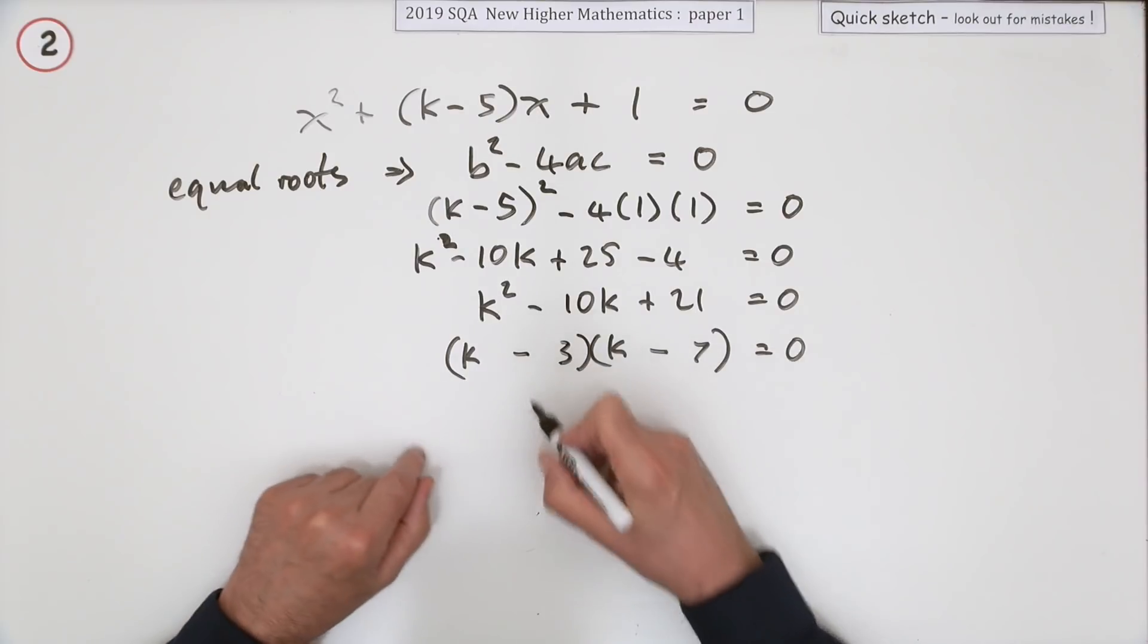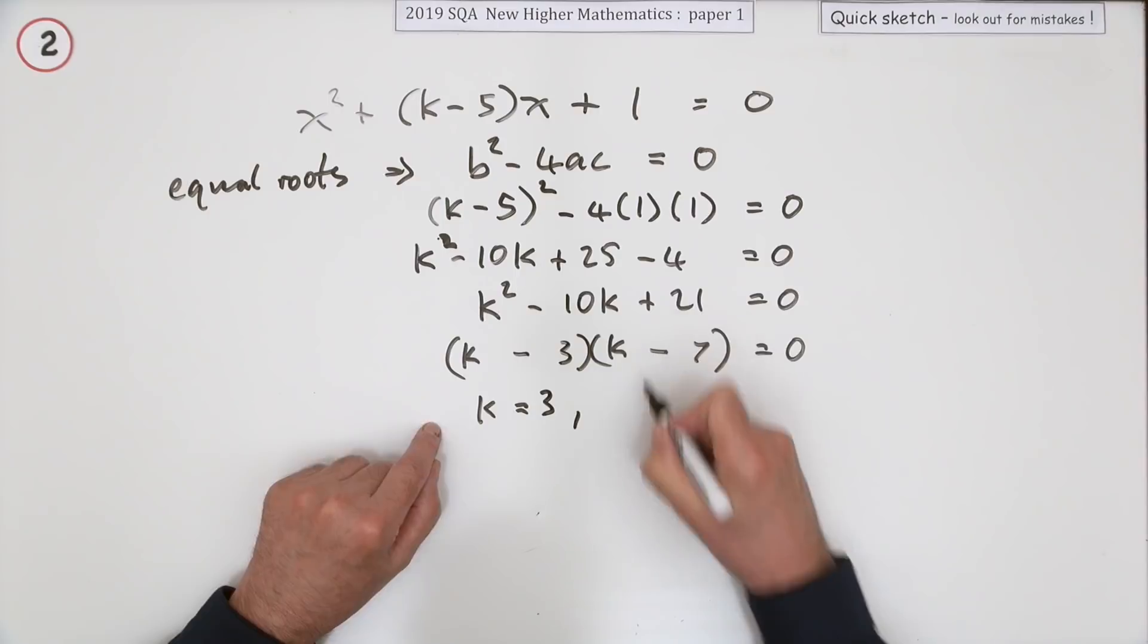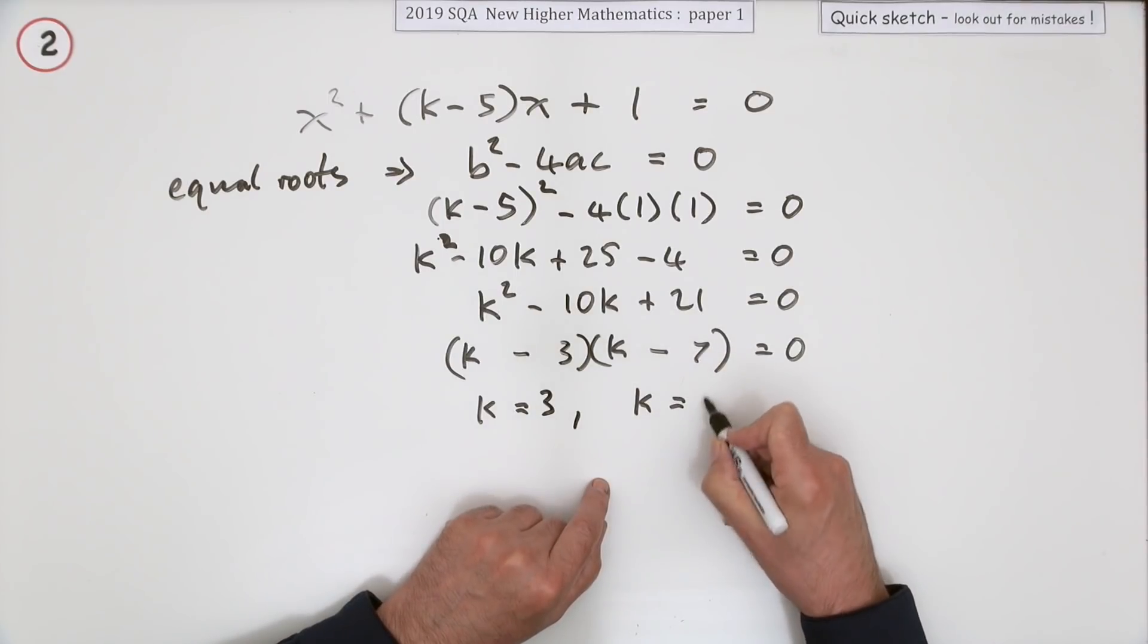Final step. Product of these two factors comes to zero, so one of them must be zero. So that could be zero, in which case k would be 3, or that could be zero, in which case k would be 7.